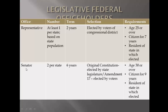In the Senate, it doesn't matter how big or small a state is or its population — everything is equal. Every state gets two senators. When elected to the Senate, you serve for six years. The original Constitution said that each state legislature would pick the state senators, but today under the 17th Amendment, we directly elect those senators. To qualify for the Senate, you must be 30 years or older, a citizen for nine years — not necessarily natural-born — and you must live in the state in which you were elected.